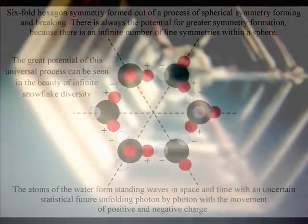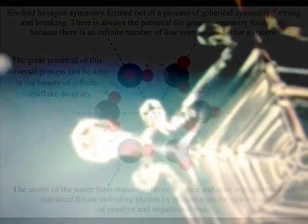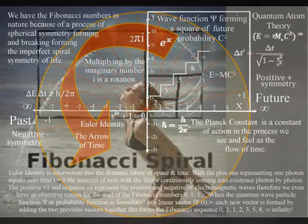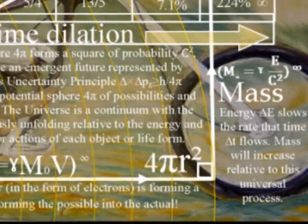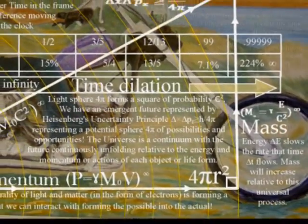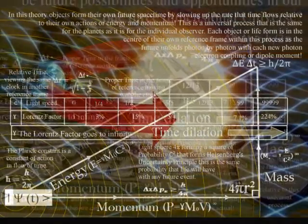Photon energy slows the rate that time flows as a process of continuous creation, relative to the energy momentum of each object or life form. Mass will increase relative to this, with the time dilation of Einstein's relativity being part of this universal process.